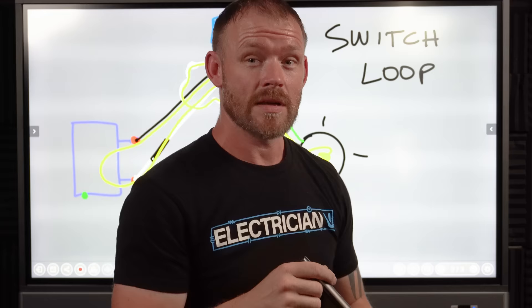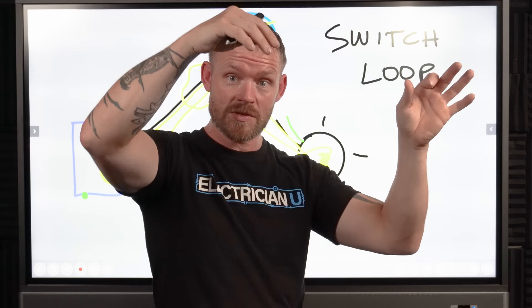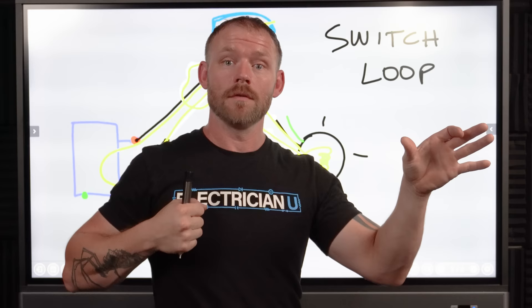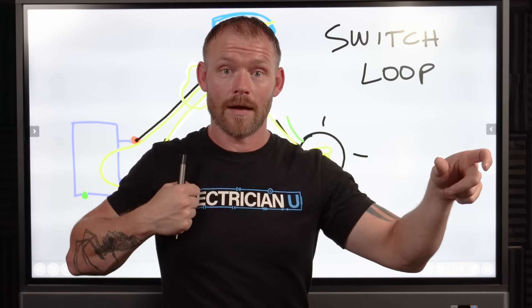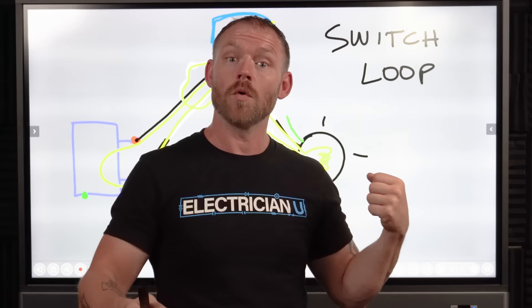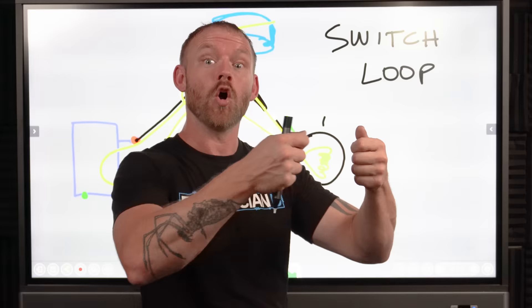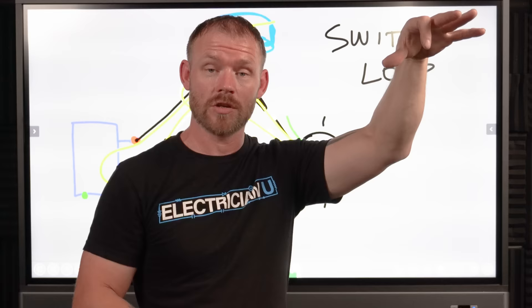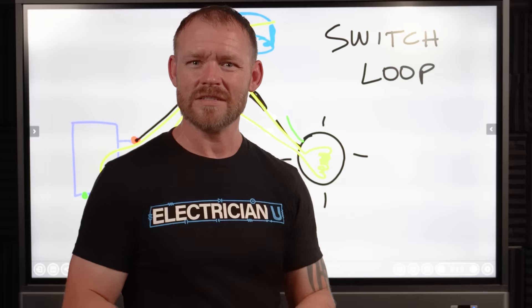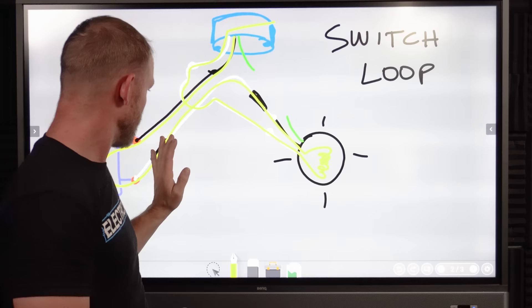That is a switch loop — you've got a hot up in the light box and you run two conductors down to send a hot down and a leg back up. A lot of door jam switches run off the same phenomenon: we run a hot up into a closet, put a door jam switch in so when you open the door the switch closes internally, turns the light on, and when you shut the door it depresses the button, opens the circuit, and shuts the light off. We do this a lot in closets, pantries, and cabinets where people want to open a door and have LED strips come on. The hot runs to the light location and two conductors run down to the door jam switch.